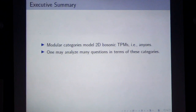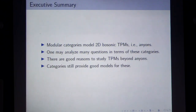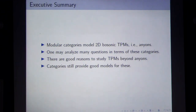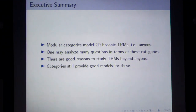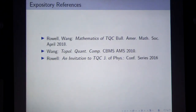In summary: modular categories model two-dimensional bosonic topological phases of matter. You can analyze questions in terms of these categories and actually give answers. There are good reasons to study topological phases beyond two-dimensional bosonic systems, and categories still provide good models for those. Thank you.